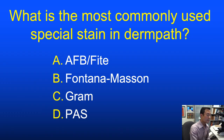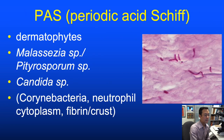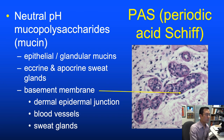After H&E, the second most popular histochemical stain in DermPath is likely the PAS stain. It is a workhorse for identifying dermatophytes and superficial fungi such as Malassezia or Candida species, and will also identify some bacteria, neutrophil cytoplasm, fibrin, crust, and neutral pH mucopolysaccharides or mucins.